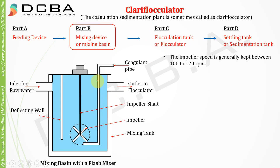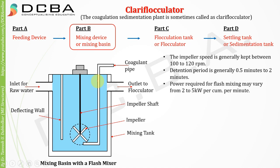The impeller speed is generally kept between 100 to 120 RPM. The retention period is generally half a minute to 2 minutes — very short for this kind of mixing basin. The power required for the flash mixer may vary from 2 to 5 kilowatts per cubic meter per minute.